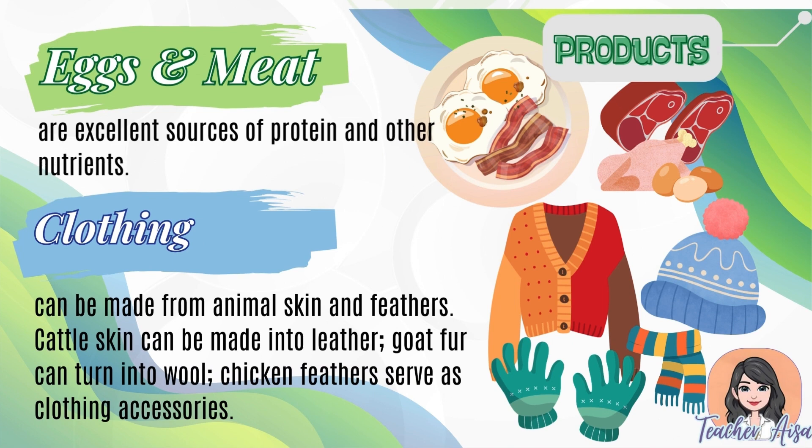Eggs and meat are excellent sources of protein and other nutrients. Clothing can be made from animal skin and feathers — cattle skin can be made into leather, goat fur can be turned into wool, and chicken feathers serve as clothing accessories.